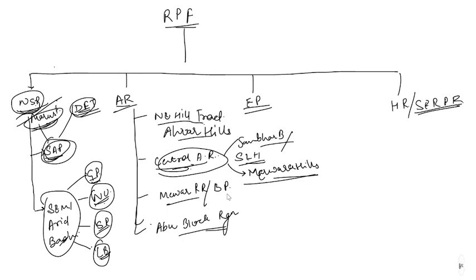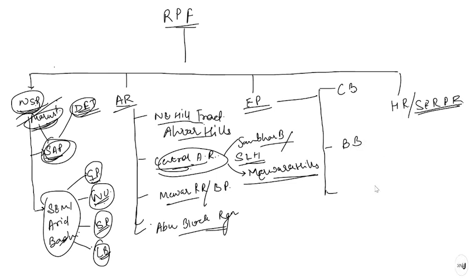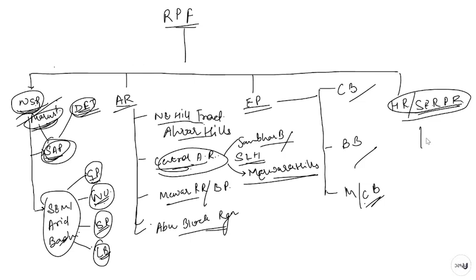After Aravali Ranges comes the Eastern Plain, which has three categories: first is Chambal Basin, then Banas Basin, and lastly Mahi or Chappan Basin. For the Southeast Rajasthan Plateau, there are two subcategories: first is Deccan Highland, also called Deccan Lava Plateau, and second is Vindian Region.